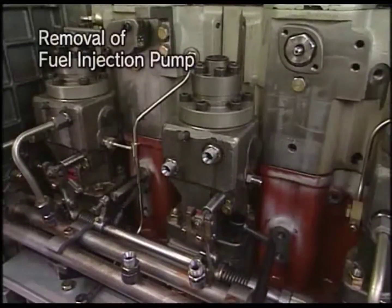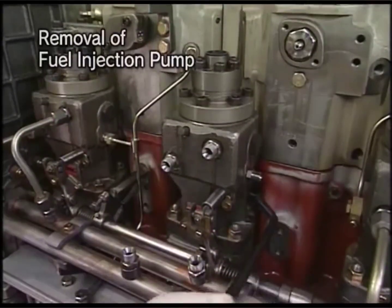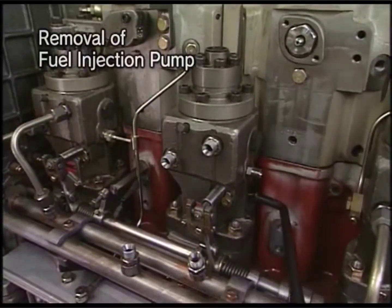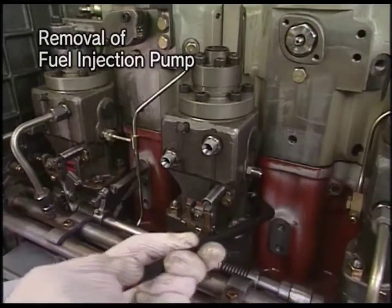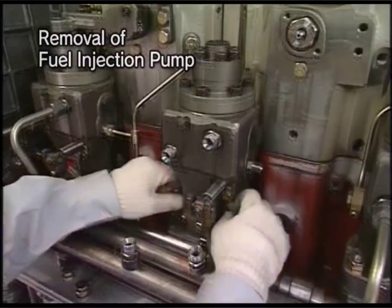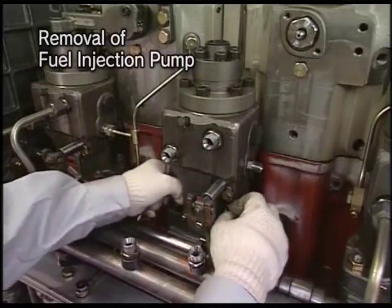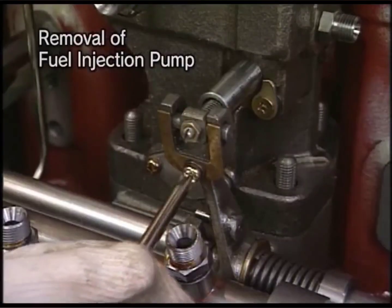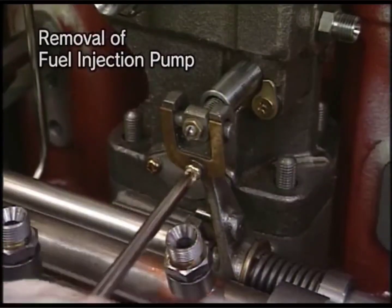Thirdly, loosen the tightening nut of fuel injection pump with the exclusive socket wrench. Detach the supporting nut of fuel rack and then remove the pump.